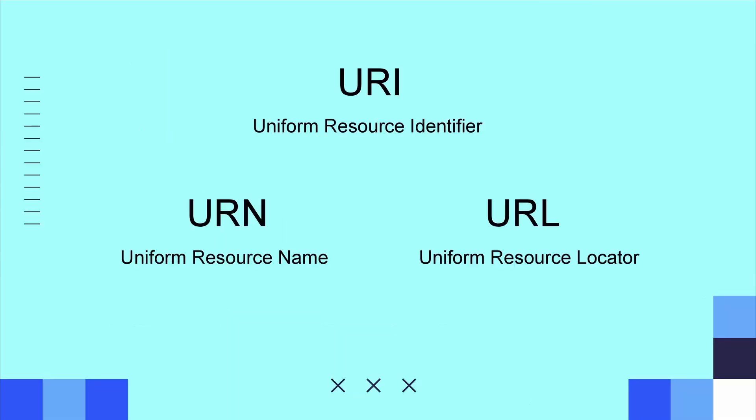URI stands for Uniform Resource Identifier, and there are two kinds of identifiers. The first is Name, which is URN — ISBN numbers are a good example of URN. The other kind is URL, which is locators. Hyperlinks, links to websites, are URLs.